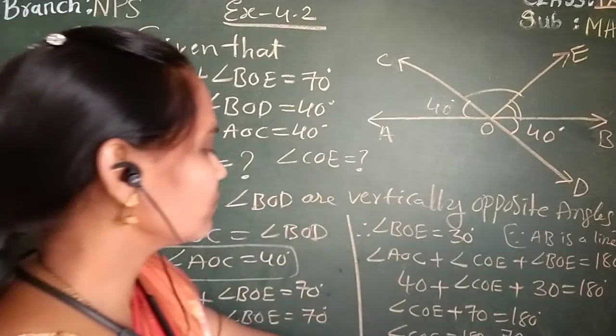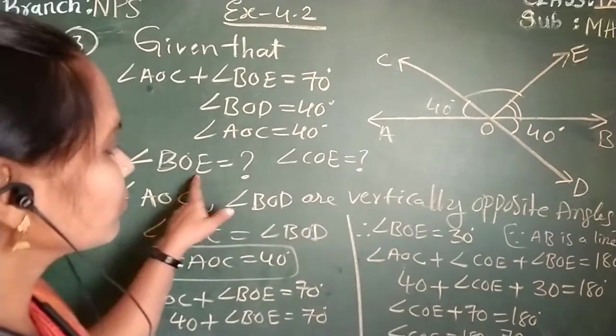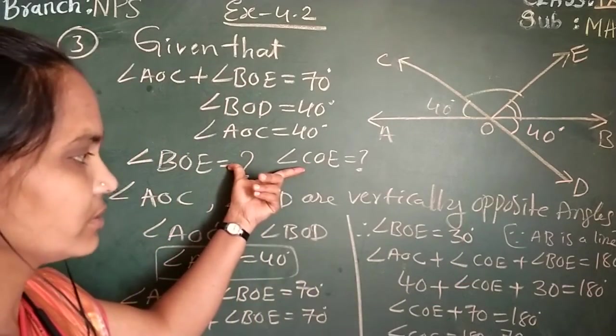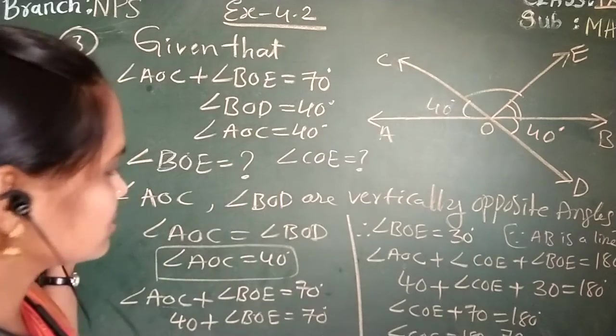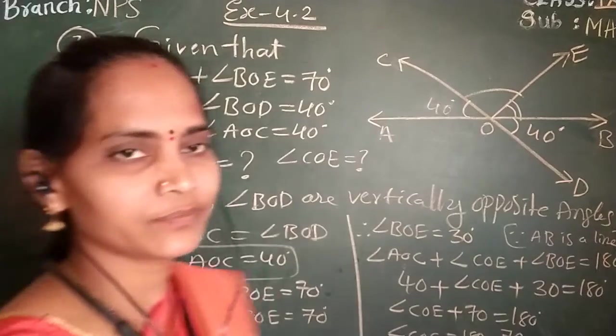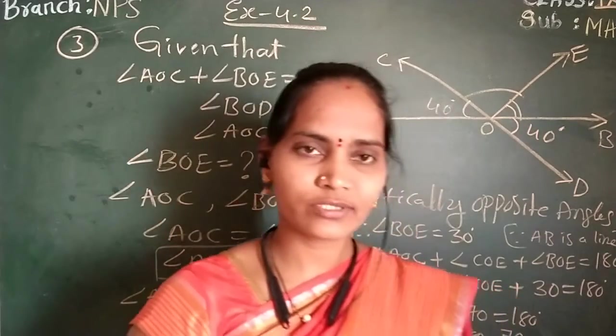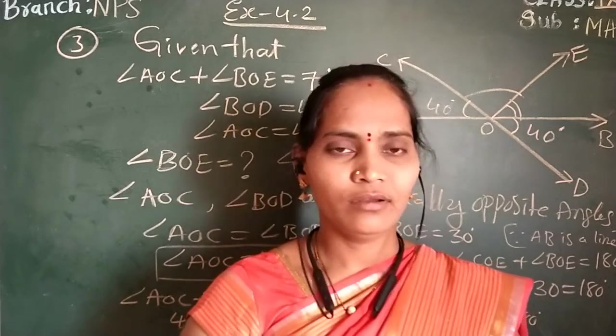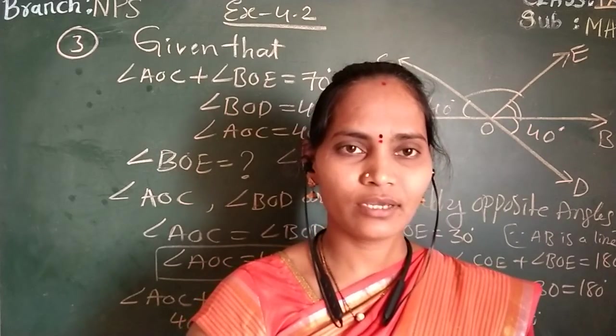So, angle COE we got as 110, angle BOE we got as 30. The two only we need to find here. This is the third question solution. I hope you understood. If you are watching first time my video, please subscribe my channel. Like, share, comment. Thank you.